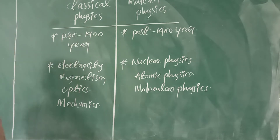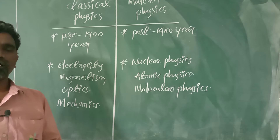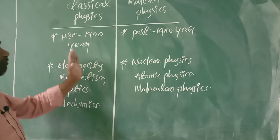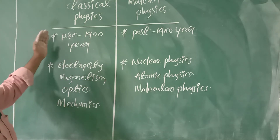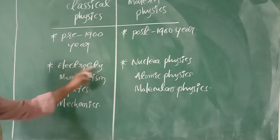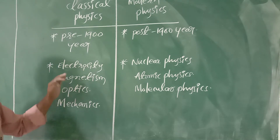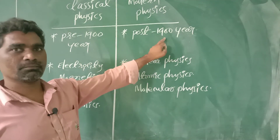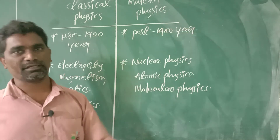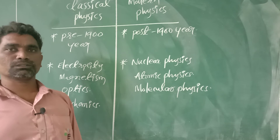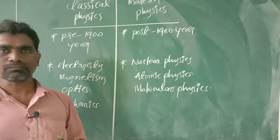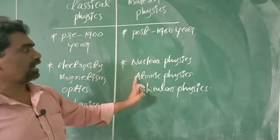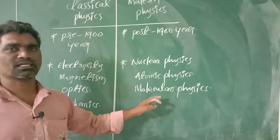So, pre-1900 year — inventions, theories, experiments, and discoveries made before 1900 — that physics comes under classical physics. For example, electricity, magnetism, optics, and mechanics. Post-1900 year, inventions and experiments made after 1900 come under modern physics: nuclear physics, atomic physics, and molecular physics.